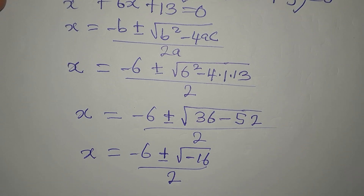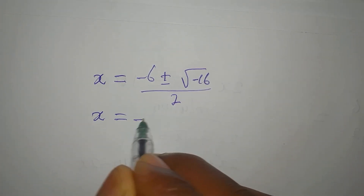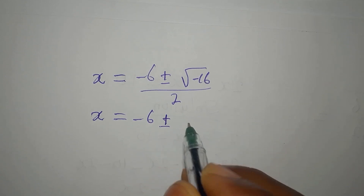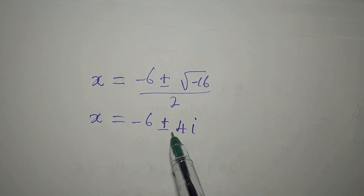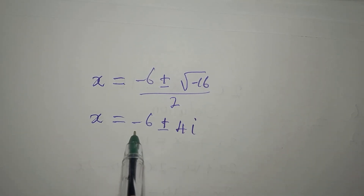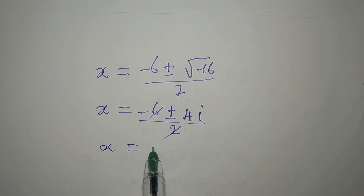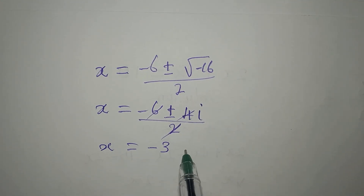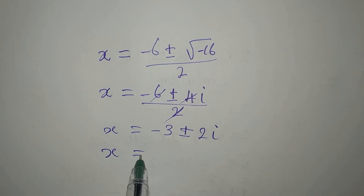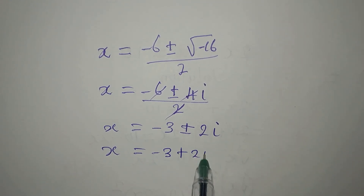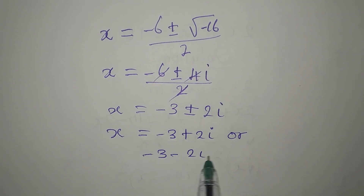Because of this negative under the root, we get 4i — since the square root of 16 is 4 and the square root of negative 1 is i — divided by 2. Two goes into both terms, so x equals minus 3 plus or minus 2i. This means x equals minus 3 plus 2i or x equals minus 3 minus 2i.